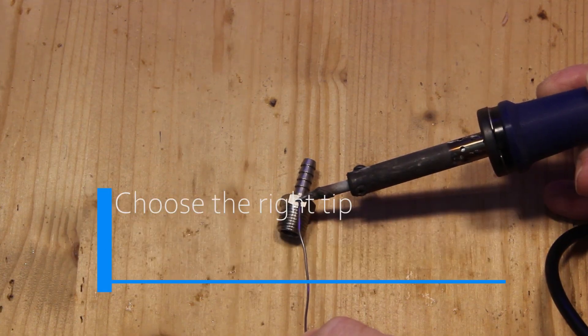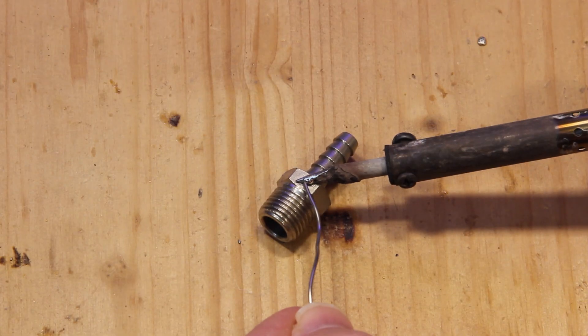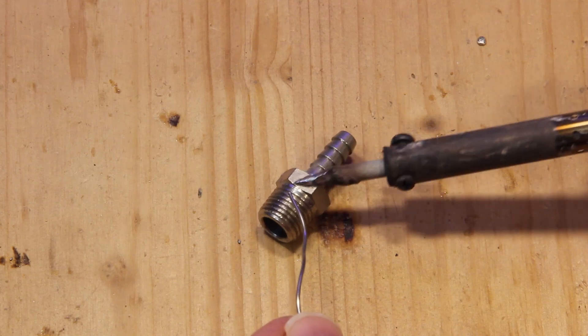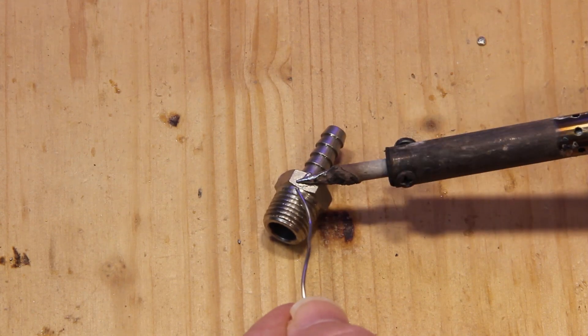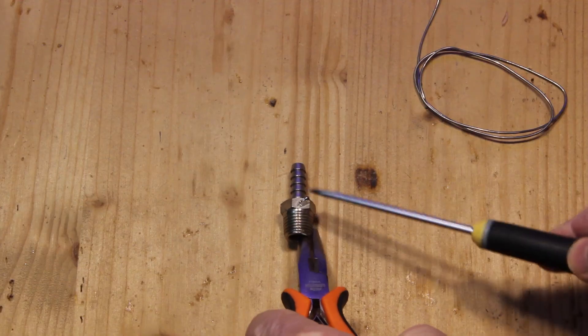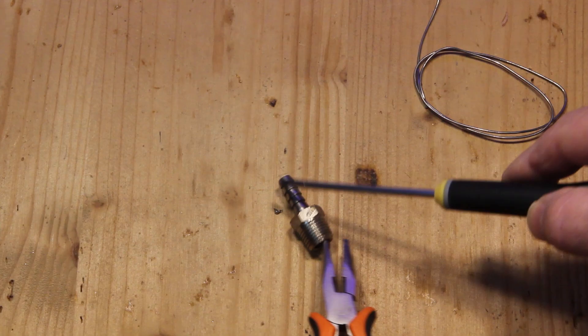First off, choose the right tip for the job. A smaller tip for a piece with large mass wouldn't be able to locally bring the temperature at the required level. The solder wouldn't wet the part or may not even melt at all. You see here the solder didn't wet the part and can be easily removed.